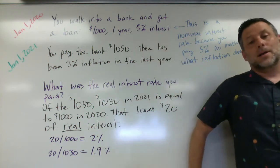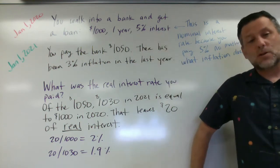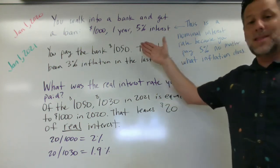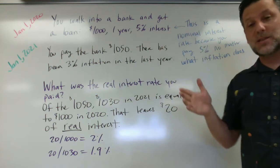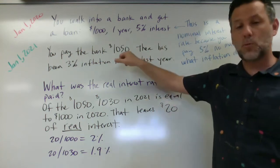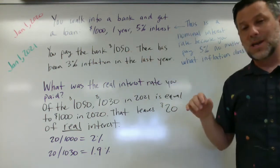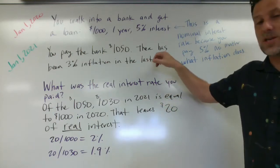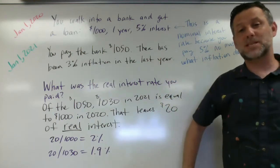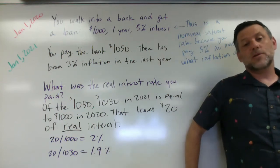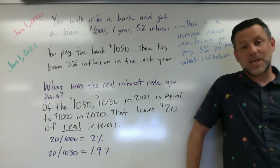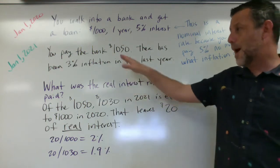Now, let's fast forward to here. It's January 1st, 2021. You walk into the bank, you pay them the $1,000 plus the 5% interest. So you pay them $1,050 like you promised. And I'm giving you some additional information here. It turns out there's been 3% inflation from January 1st, 2020 to January 1st, 2021. So we've got a 3% inflation rate. You pay back your loan.